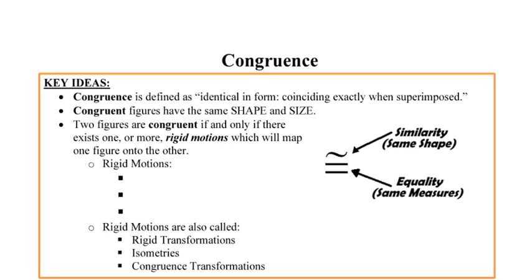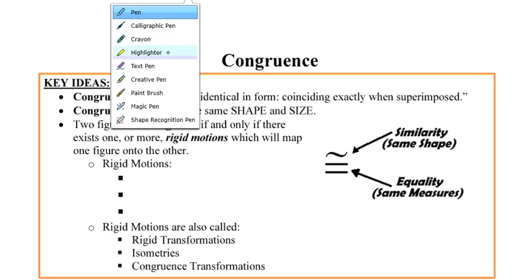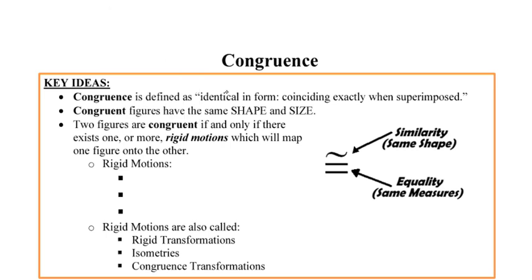In order to define congruence, we say that two figures are identical in form, or that they are coinciding exactly when superimposed upon one another. In other words, when we lay one on top of the other, they're going to be exactly the same. Congruent figures are said to have the same shape and the same size.